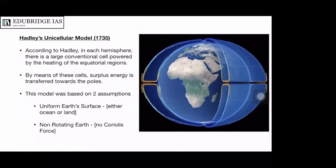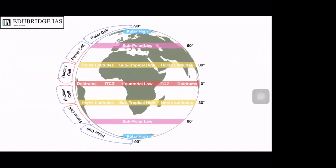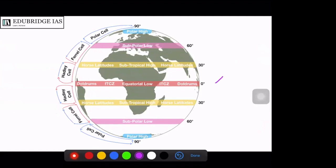Because Hadley's model did not take into account the rotation of the earth, it does not completely capture the mechanisms governing global air circulation. For that, we rely on Ferrell's tricellular model. Ferrell said that the earth's surface has different pressure zones. You need to remember four latitudes: 0 degrees, 30 degrees, 60 degrees, and 90 degrees.